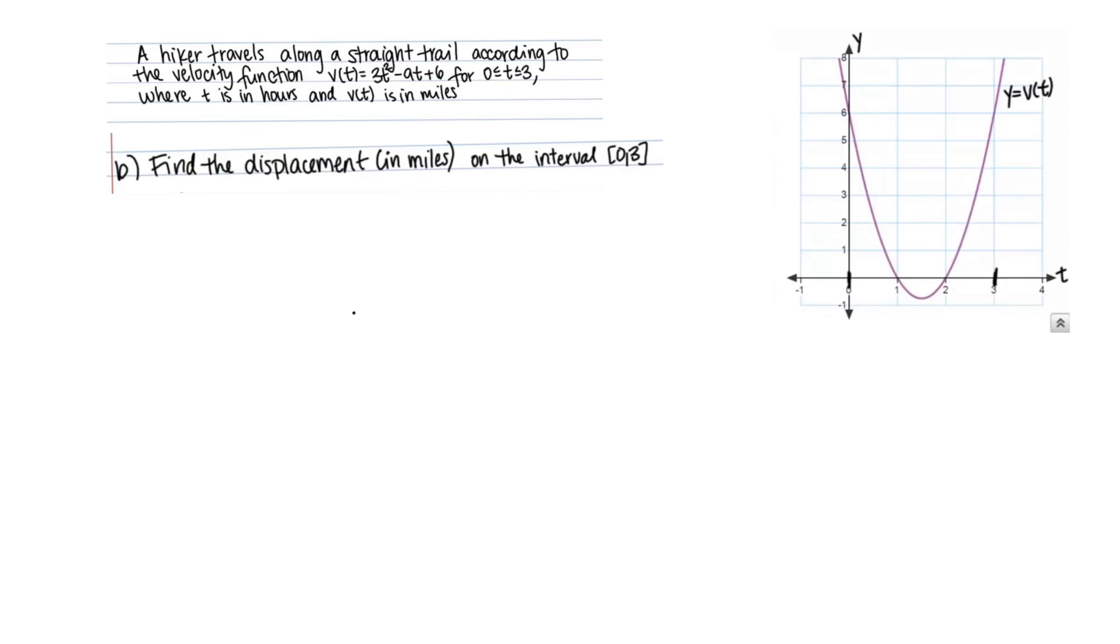So now to find that displacement we're going to set up the definite integral from 0 to 3 of 3t squared minus 9t plus 6 dt.